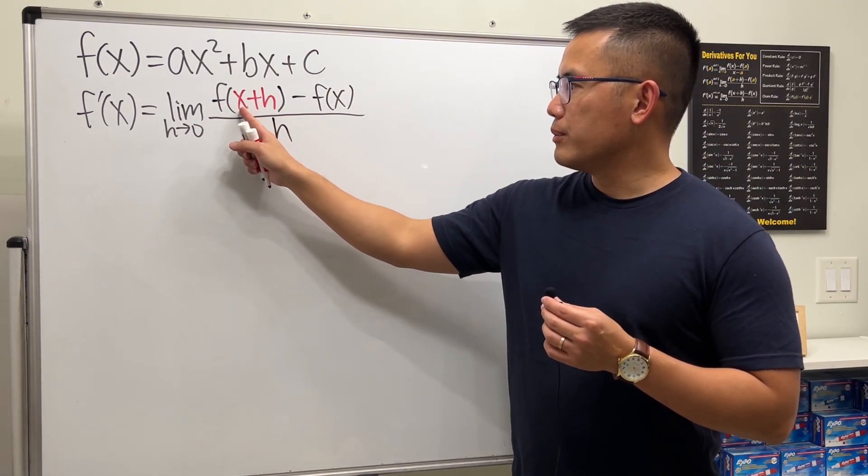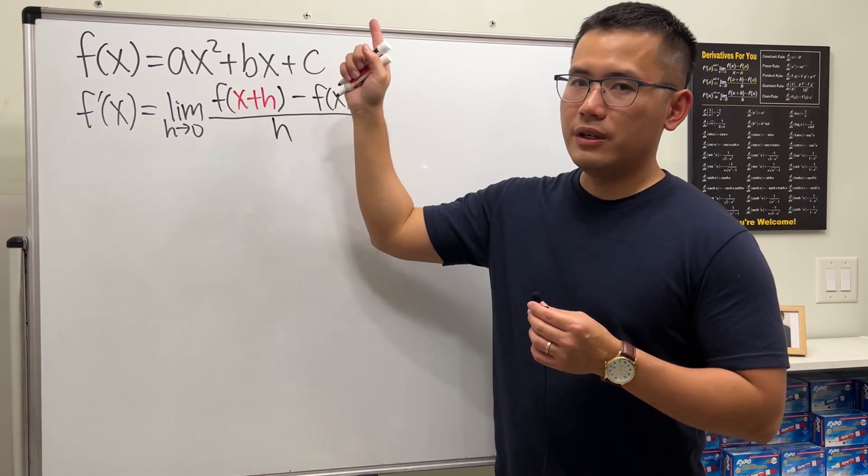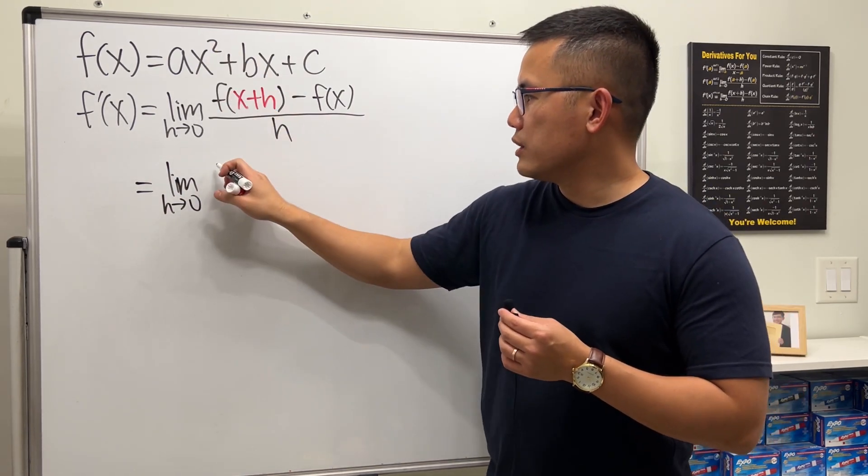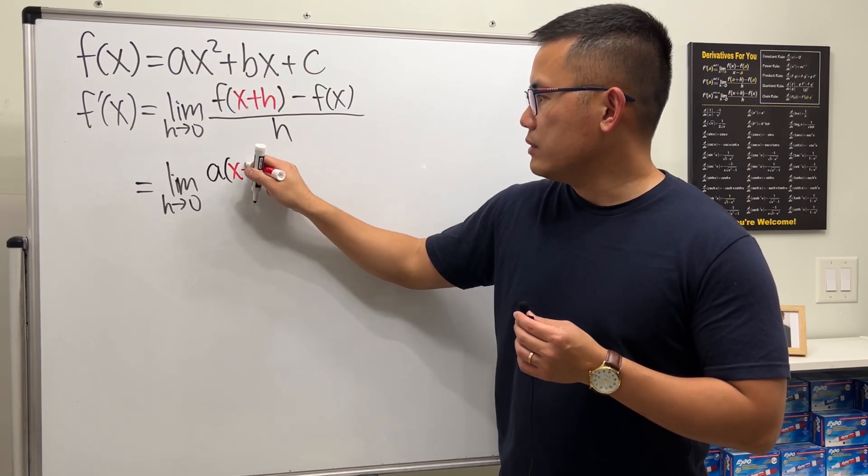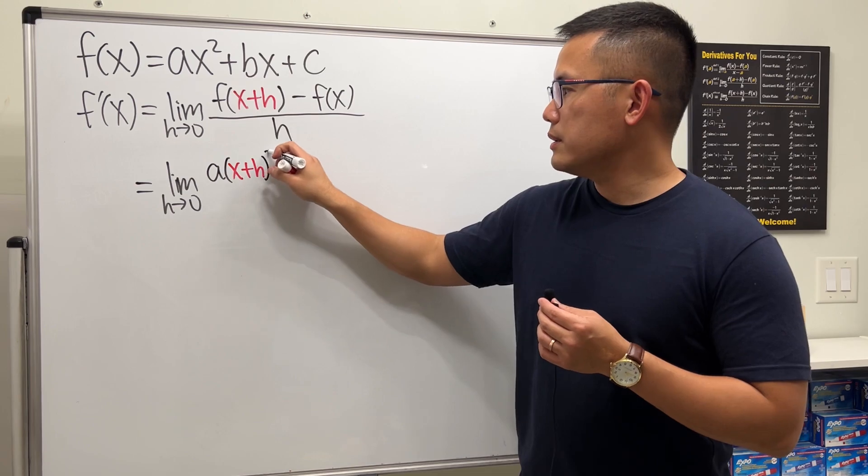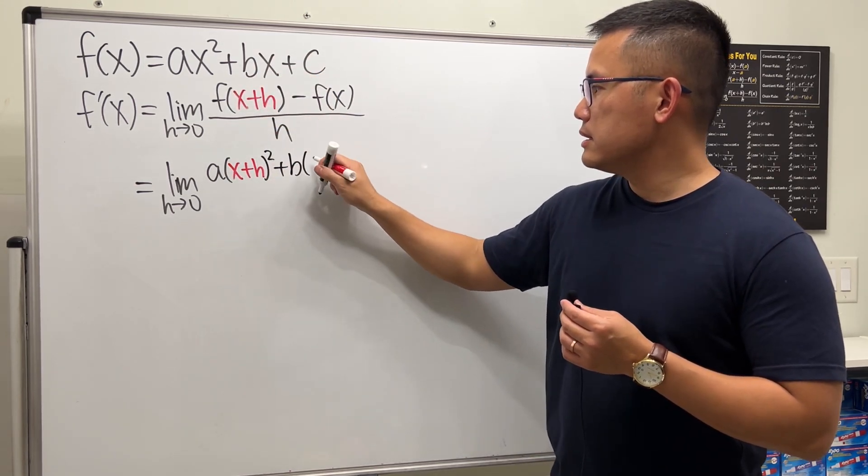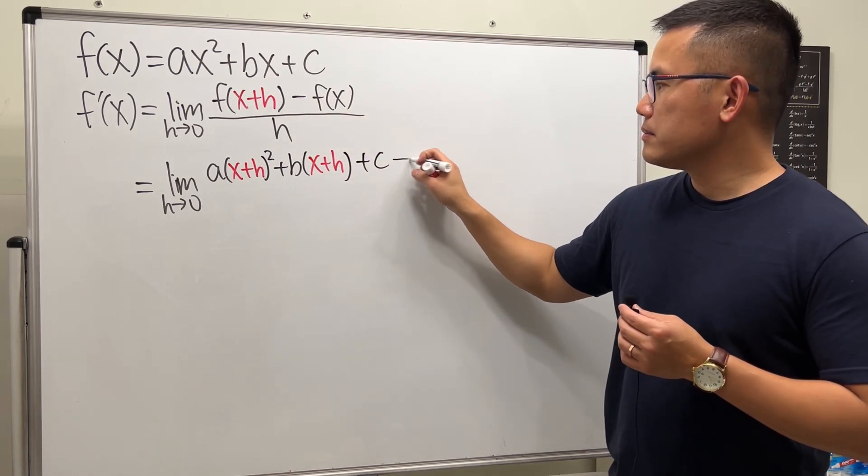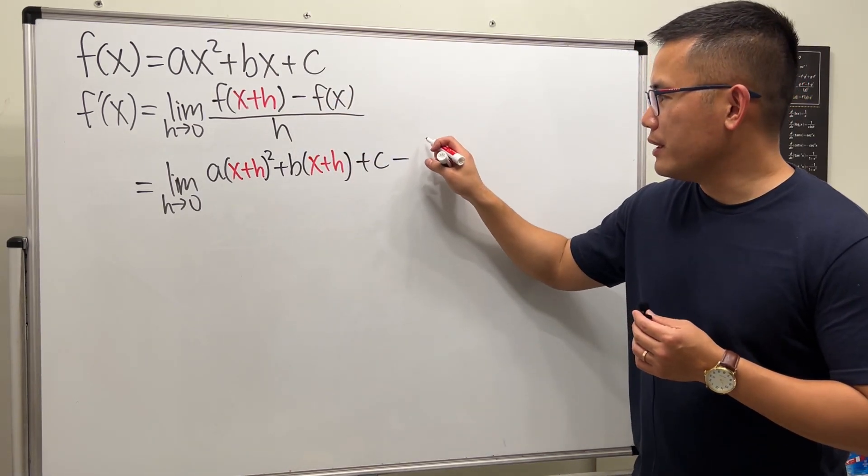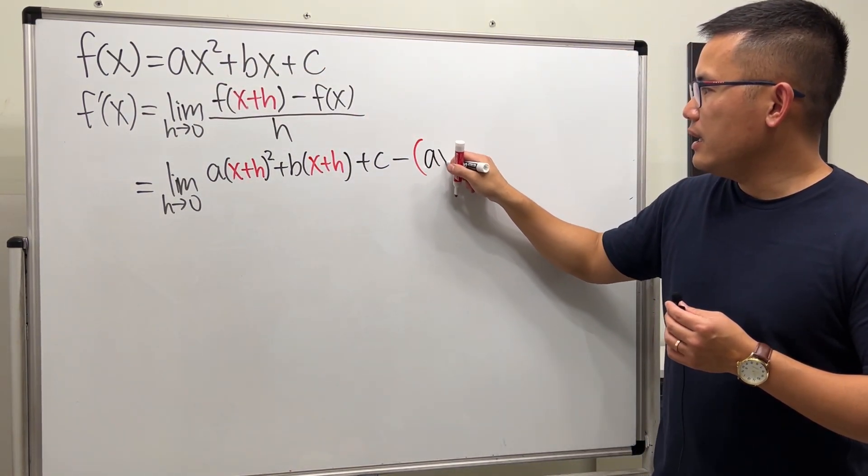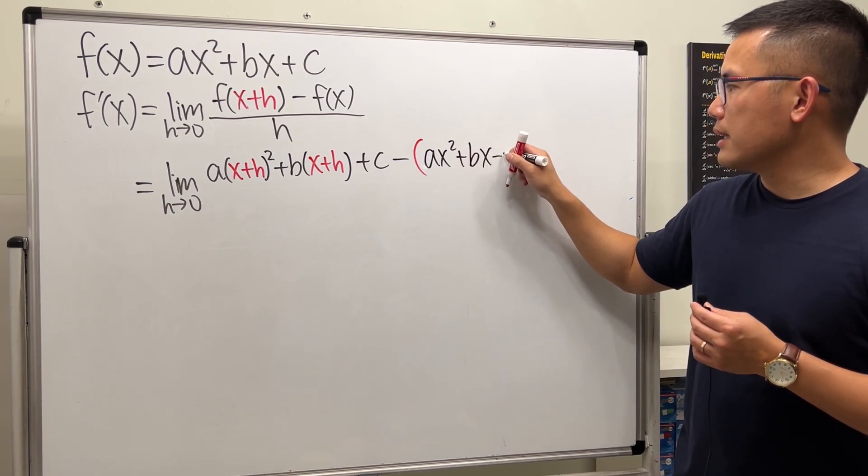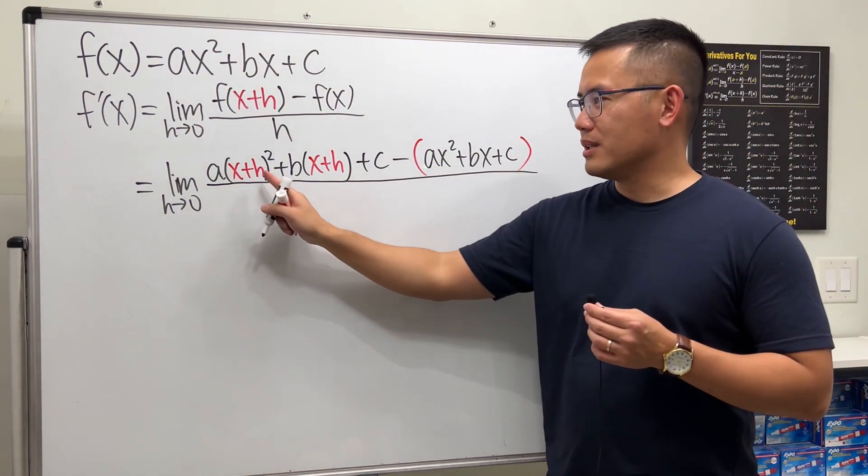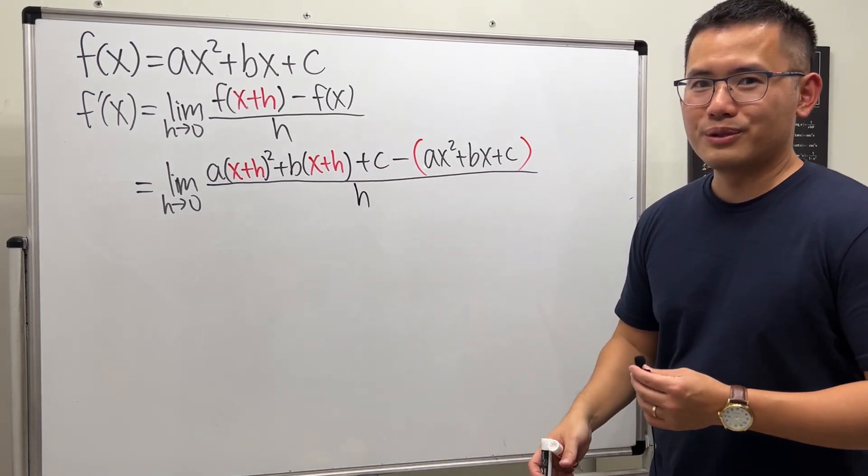Now, to get this, we have to put x plus h into here. So let's write down the limit as h approaching 0. And this is just a times x plus h squared plus b times x plus h, and then we still have that plus c. And then we're going to minus f of x. Be sure we put parentheses, so ax squared plus bx plus c. I know this is such a long one, but it's going to get longer because of this guy, and then later on it's going to get shorter too.